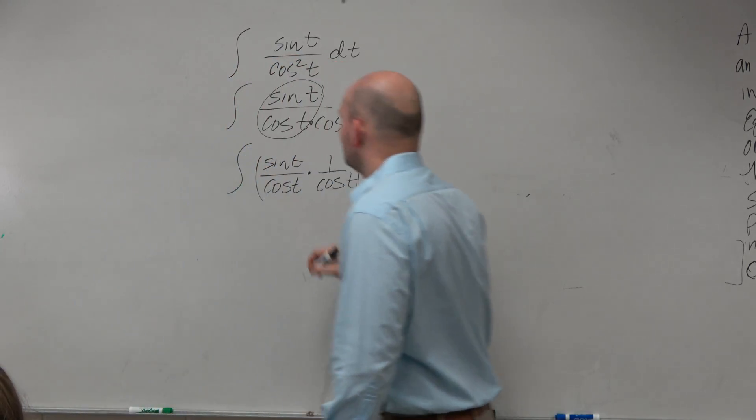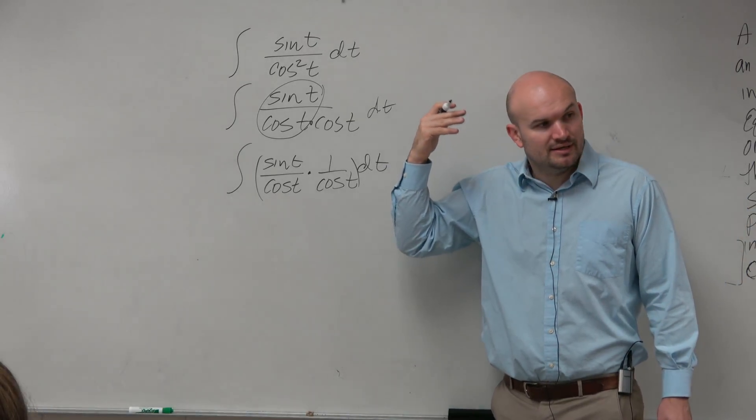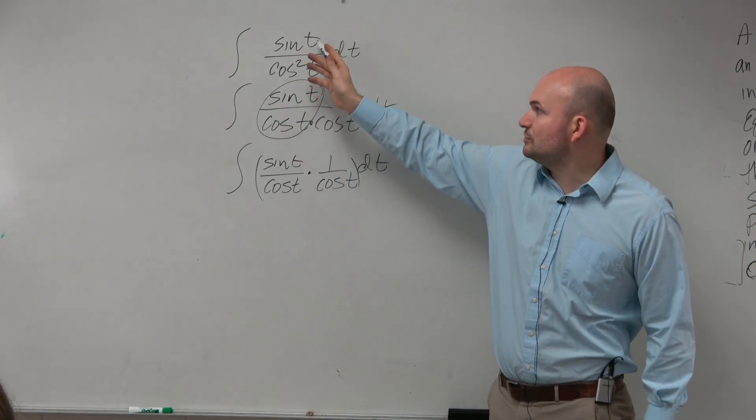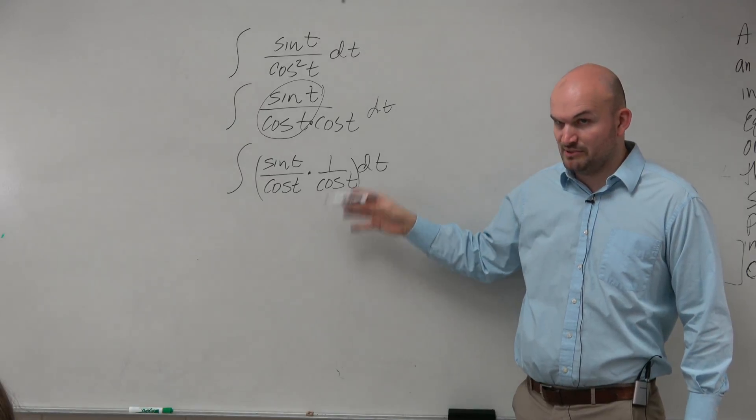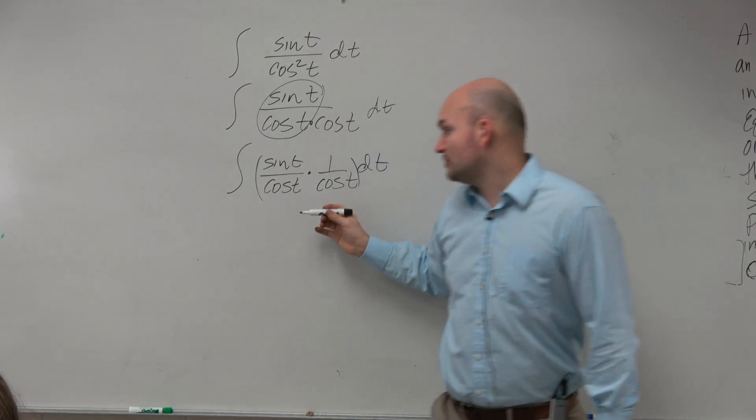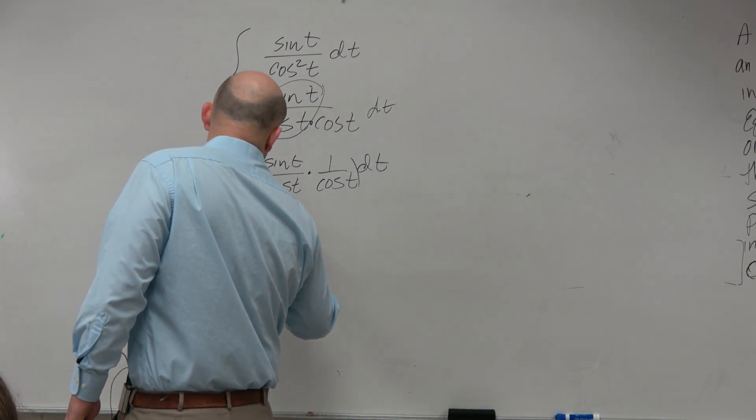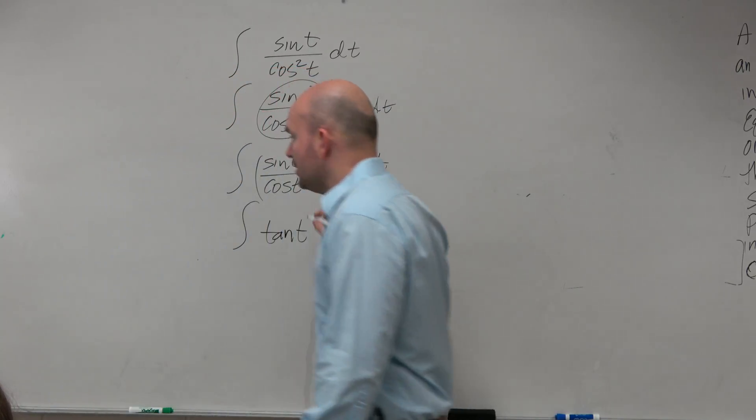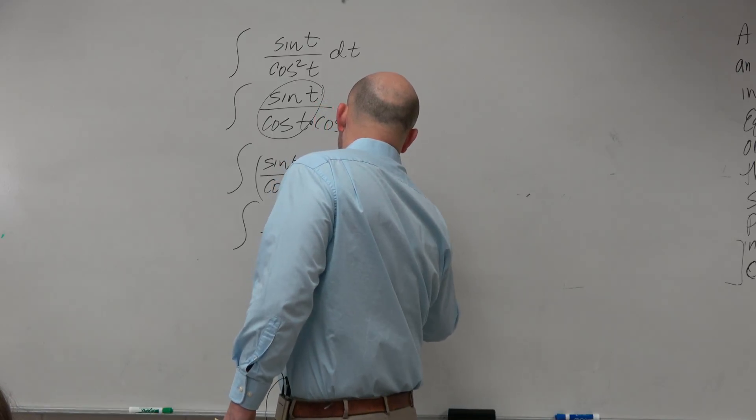Now, I'm showing you a lot of work, but I want you to see what I'm doing. Because otherwise, you could just go from here to the next step if you want to, but I'm showing you where this comes from. So you're grouping these together, sine over cosine is equal to tangent of t, and 1 over cosine is equal to secant of t.